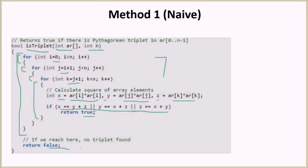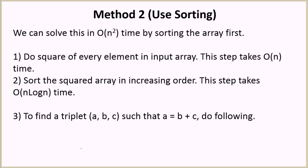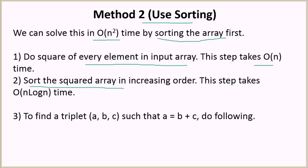Since the naive method has O(n³) time complexity, there is a better method using sorting that solves the problem in O(n²) time. The algorithm has three steps: first, square every element in the input array — this takes O(n) time by iterating over all elements once. Second, sort the squared array in increasing order, which takes O(n log n) time.